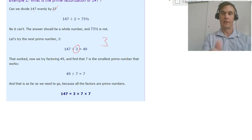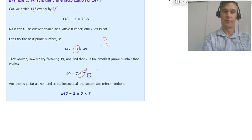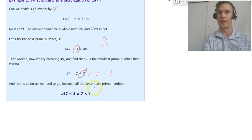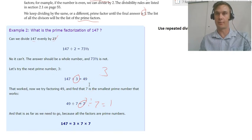We can do 7, obviously 7 divided by 7 will equal 1. So we have our prime factorization of 147 equals 3 times 7 times 7. So we broke it down into each prime number.